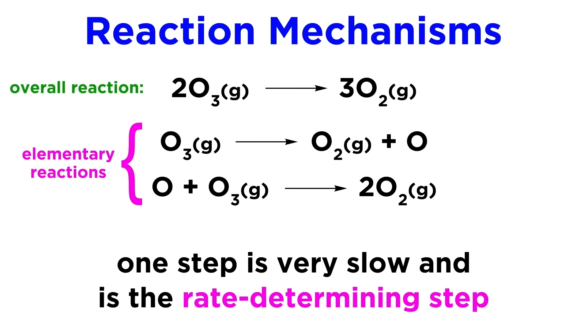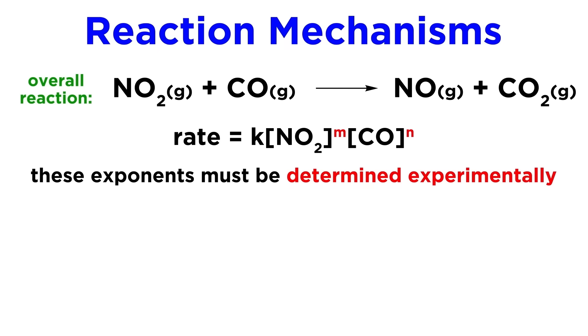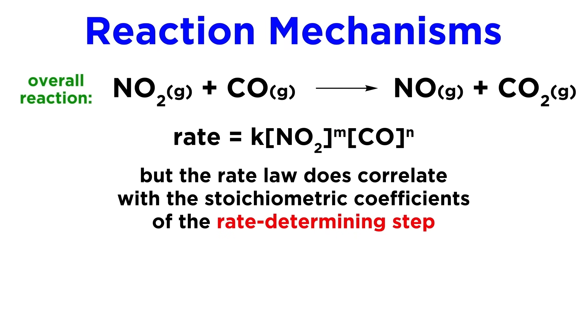What can the rate-determining step tell us about the rate law? Well, we know that the rate law for some chemical reaction, like this one here, cannot be found using the stoichiometry of the overall reaction. These exponents must be determined experimentally. But if we have the reaction mechanism, things are a little different. The exponents in the rate law can be determined by looking at the stoichiometry of the rate-determining step from the reaction mechanism.